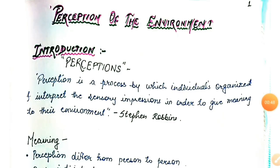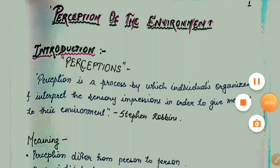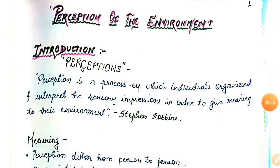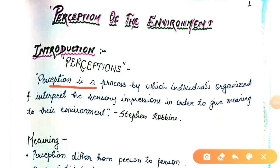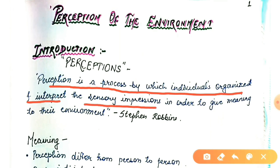Perception of the environment — introduction. What do you mean by perception is very important. The definition is as follows: perception is a process by which individuals organize and interpret the sensory impressions in order to give meaning to their environment — Stephen Robbins.